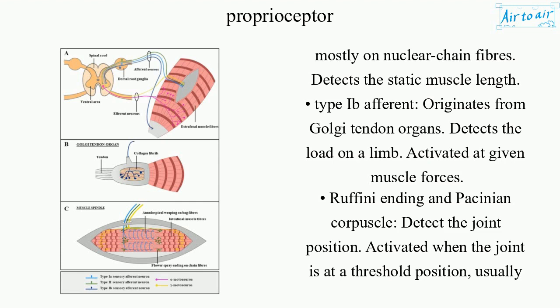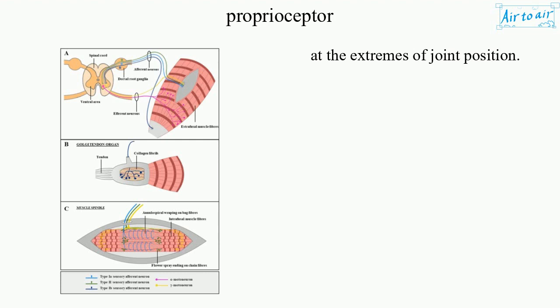Type Ib afferent originates from Golgi tendon organs, detects the load on a limb, and is activated at given muscle level forces. Ruffini endings and Pacinian corpuscles detect joint position, activated when the joint is at a threshold position, usually at the extremes of joint position.